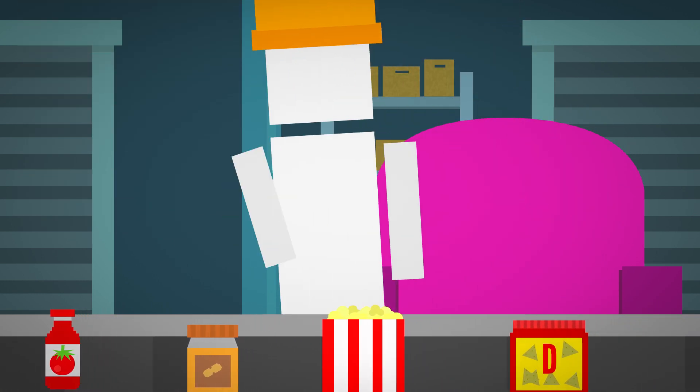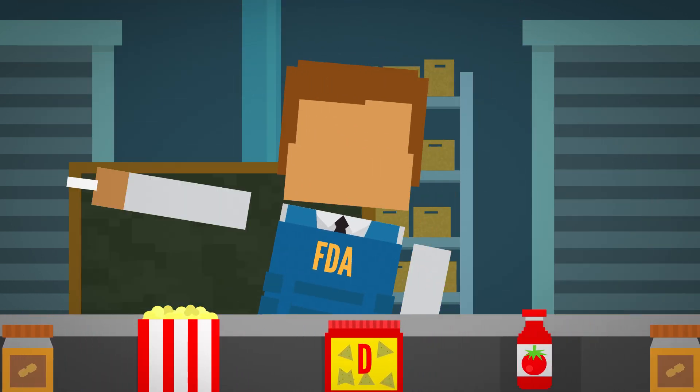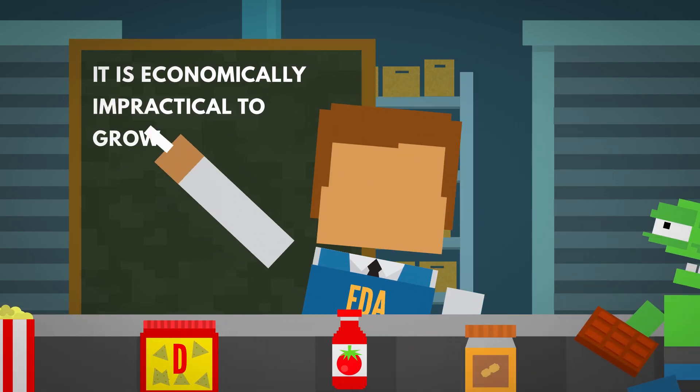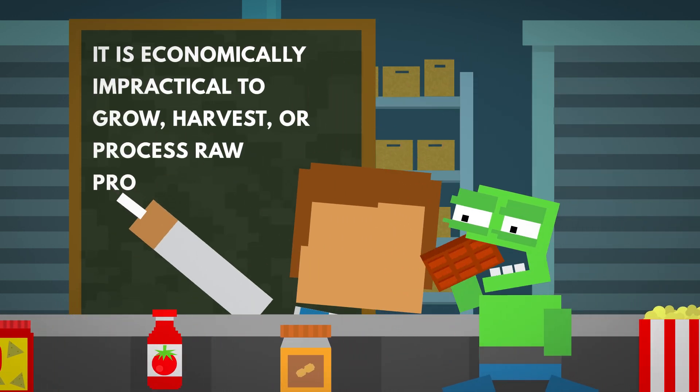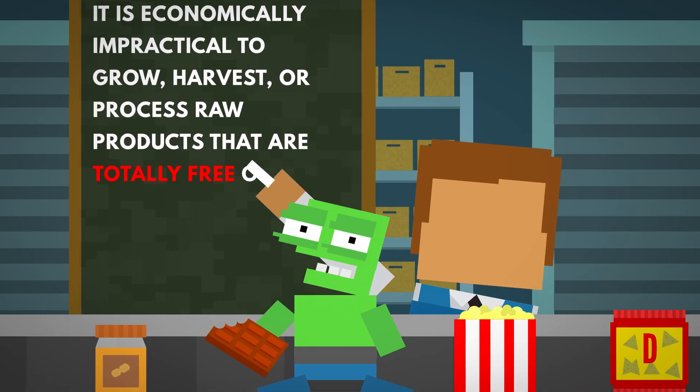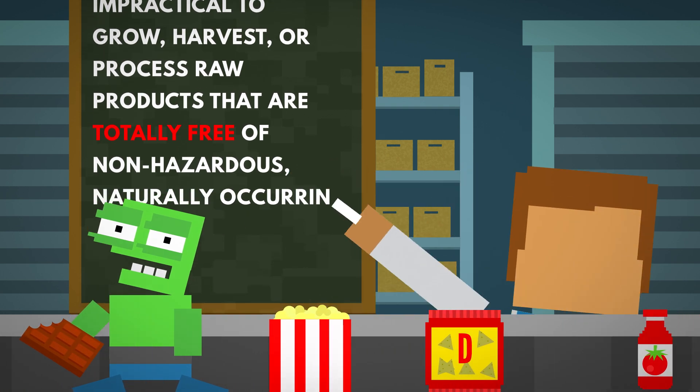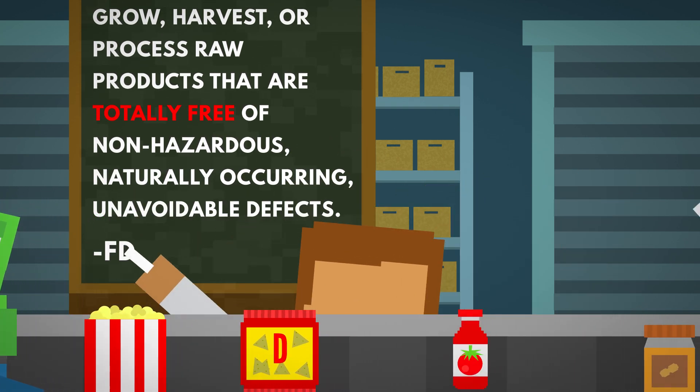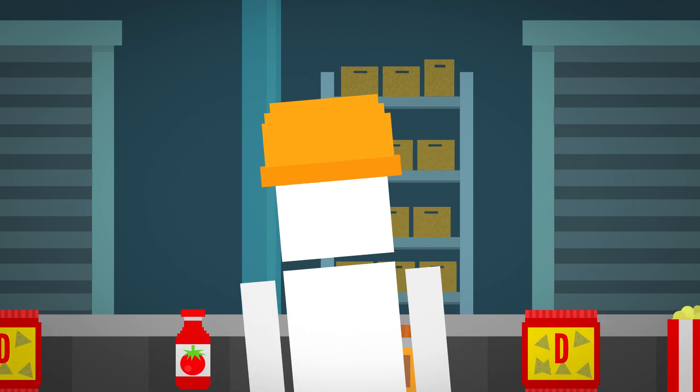According to the US Food and Drug Administration, it is economically impractical to grow, harvest, or process raw products that are totally free of non-hazardous, naturally occurring, unavoidable defects. So what exactly do they mean by unavoidable defects?